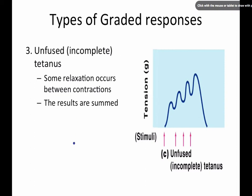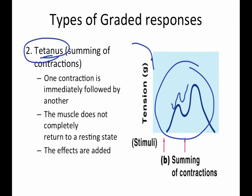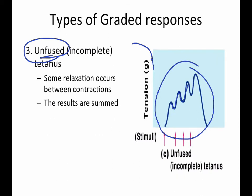Within tetanus there are two types. The first is unfused or incomplete tetanus. Unfused tetanus means that some relaxation occurs — from each contraction you get a little low, a little bit of relaxation time, and then it sums again. The results are summed, but you get a little bit of relaxation each time.